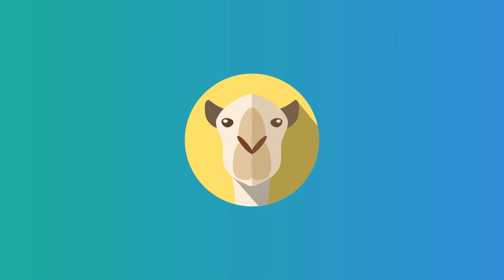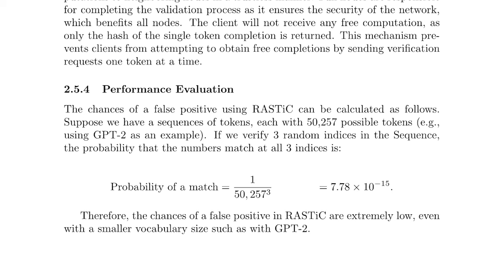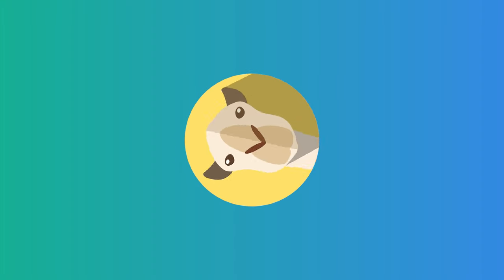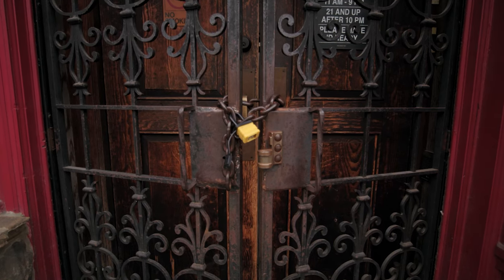Now let's assess the likelihood of encountering false positives using the RASTIC algorithm. Considering a token sequence with each element consisting of 50,000 possible tokens, if we randomly select three indices in each sequence, the probability of finding matching numbers at all three indices is remarkably low. Even when utilizing a rather small vocabulary size, these findings emphasize the algorithm's robustness in minimizing false positives, bolstering its credibility as a dependable mechanism.